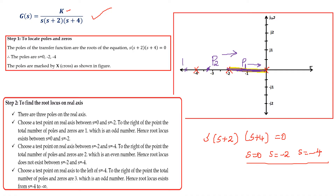Choose a test point P3 to the left of -4. Looking to the right of this test point, there are three poles, which is an odd number. So root locus exists from -4 to negative infinity. Root locus exists between -2 to 0, and root locus exists between -4 to negative infinity.